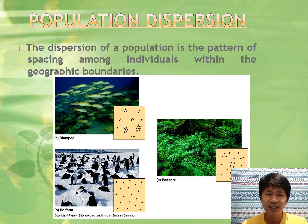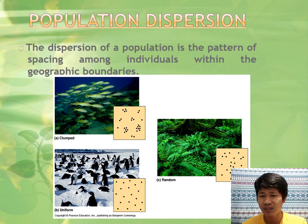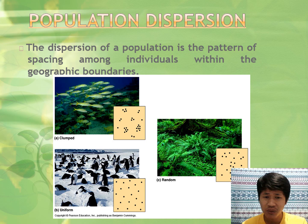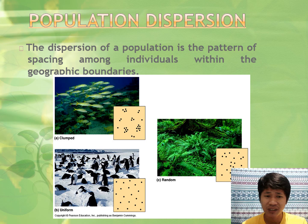We are done with size and population density. Population dispersion is the pattern of spacing among individuals within geographic boundaries — how much these organisms or individuals are scattered in a geographic area. They are either clumped together, uniform, or random. These are the three models in describing dispersion: clumped, uniform, and random.